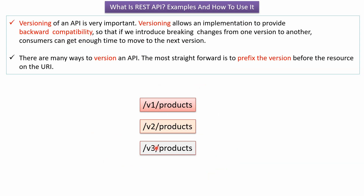Versioning of an API is very important. Versioning allows an implementation to provide backward compatibility, so that if we introduce breaking changes from one version to another, consumers get enough time to migrate to the next version. There are many ways to version an API. The most straightforward way is to prefix the version before the resource in the URI — for example, version 1, version 2, or version 3 before the products resource.